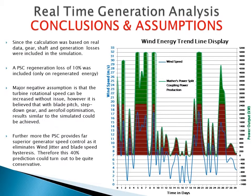Since the calculation was based on real data, gear, shaft and generation losses were included in the simulation. A PSC regeneration loss of 10% was included, applied only to the regenerated energy. The only major negative assumption is that turbine blade rotational speed can be increased without issue, whereas in reality it could be subject to a small law of diminishing returns as blades may capture less power at higher RPMs. However, it is believed that with blade pitch, step-down gear and aerofoil optimisation, results similar to the simulation could be achieved. Furthermore, the PSC provides far superior generator speed control as it eliminates wind jitter and blade speed hysteresis, meaning this 40% prediction could be quite conservative.